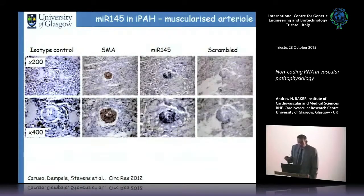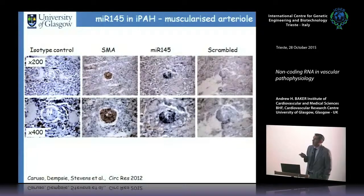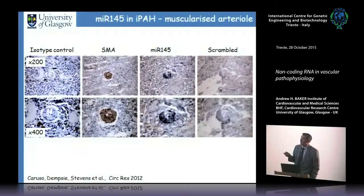From clinical samples, microRNA-145 is expressed at high levels in muscularized arterioles — the occlusive lesions seen in small pulmonary vessels — shown by smooth muscle cell staining. miR-145 is also highly expressed in the complex plexiform lesions that have complex smooth muscle and vascular structures.